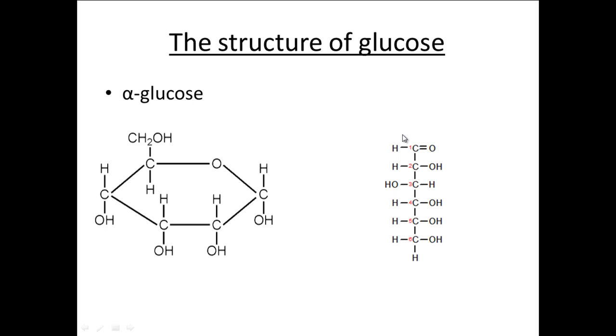In this right-hand diagram, they've numbered the carbons — and if we were to number the corresponding carbons on the other diagram, this would be the first, the second, the third, the fourth, the fifth, and the sixth. This is sometimes called a ring structure.